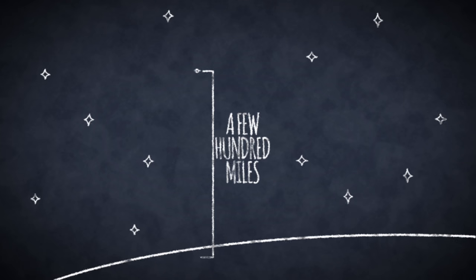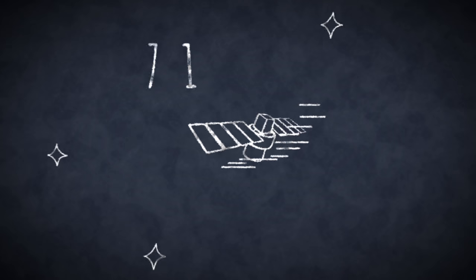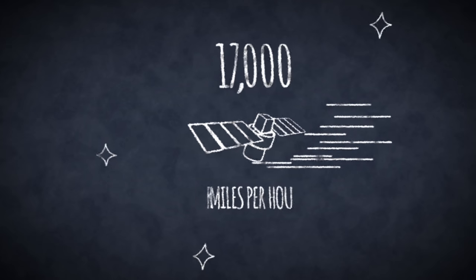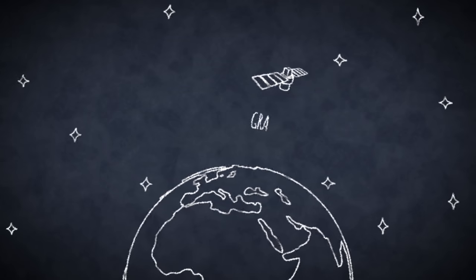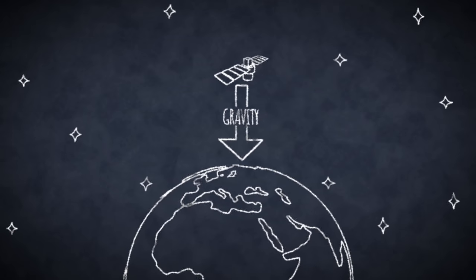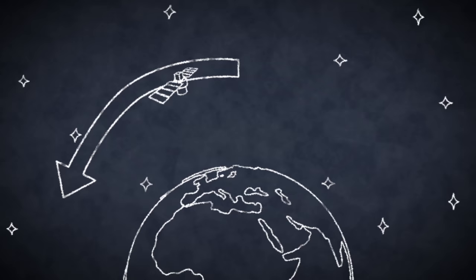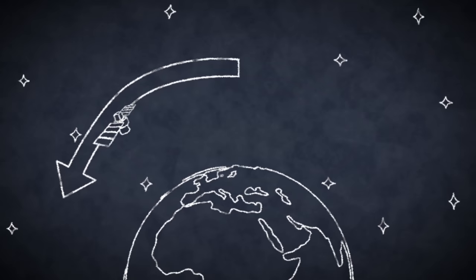Speeding around our planet at 17,000 miles per hour, that's fast enough so that even as the force of gravity pulls them back toward the ground, they're falling parallel to Earth's curved surface.